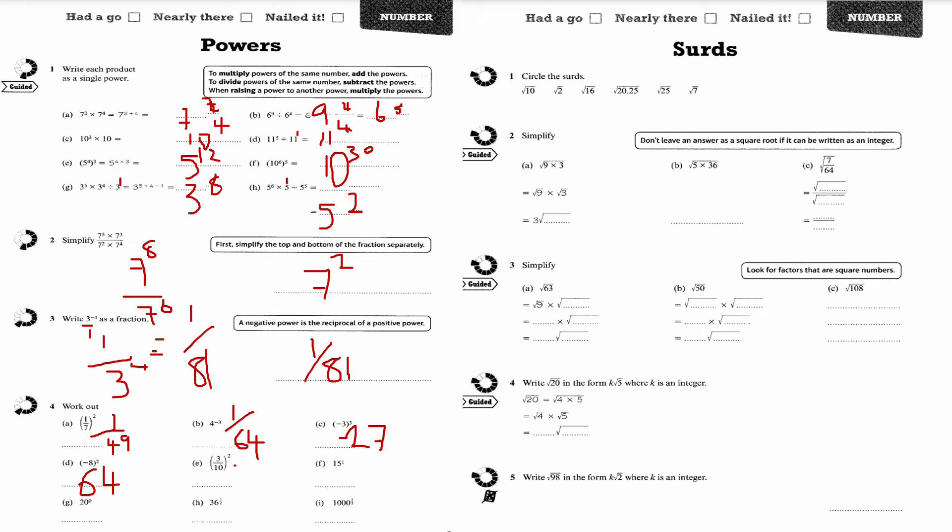3 tenths all squared is going to be 9 over 100, because 3 squared is 9 and 10 squared is 100. 15 to the power of 1 is 15. Anything to the power of 1 just stays as itself. 20 to the power of 0, anything to the power of 0 in maths is just 1.